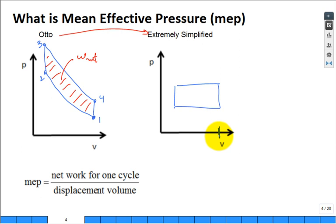And you line the box up such that the volume at bottom dead center matches the volume at bottom dead center, and the volume at top dead center is about the same as the volume at top dead center. And you want the same enclosed area, the same work net.